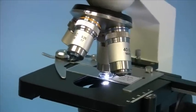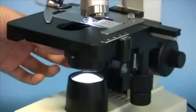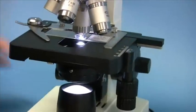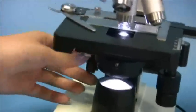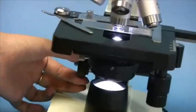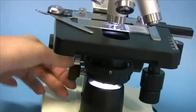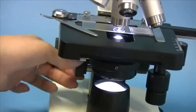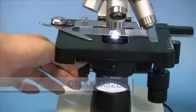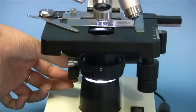In order to get the optimum conditions for your observation, you can also adjust the condenser and move it up or down depending on the objectives you're using. So if you're using higher power objectives, you should raise the condenser and lower it when using the 10x objective.